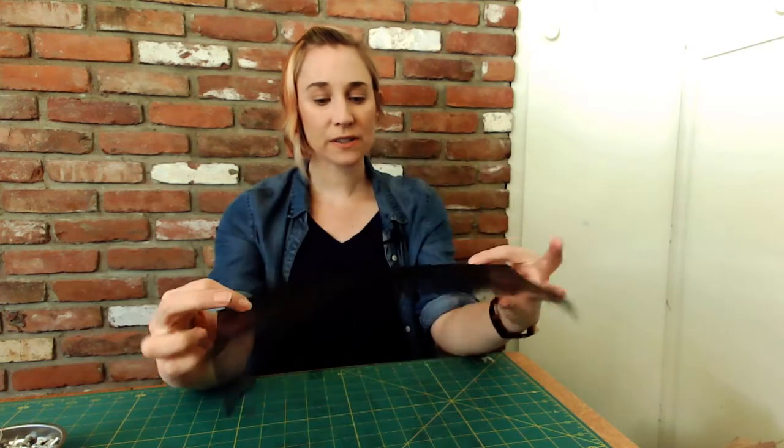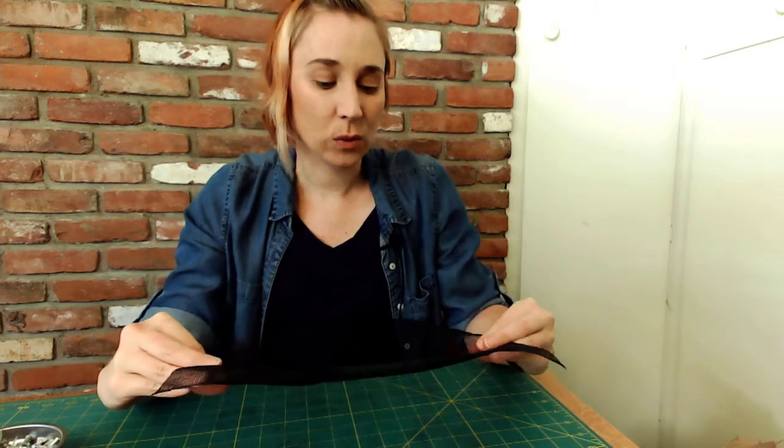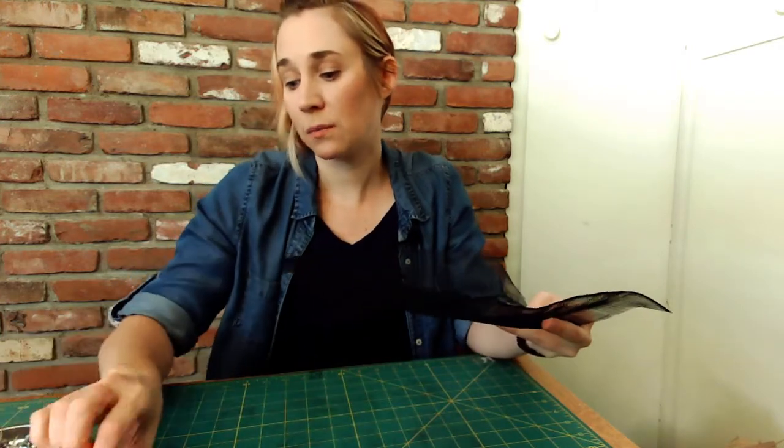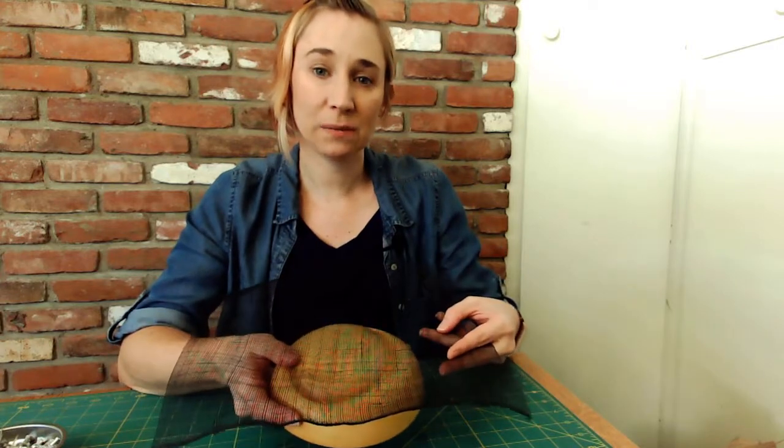Today's lesson I'm going to show you how to make a sinamay cocktail hat or fascinator. A fascinator is usually a small little hat that is an evening wear hat. And sinamay is this material, a kind of mesh fiber. It's very thin and this is a pre-stiffened sinamay. What I'm going to do is stretch it over a hat block to create the shape that I want.